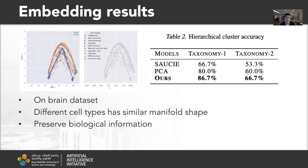Here are some embedding results on the mouse atlas dataset. On the brain dataset, the left two figures show the embedding results, demonstrating that different cell types have similar manifold shapes. We also performed clustering for quantification, and the results show that our model can preserve biological information across species.